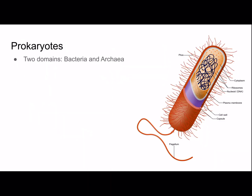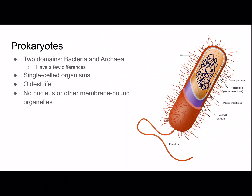Prokaryotes are in two domains: bacteria and archaea, and those two domains have a few differences. All prokaryotes are single-celled organisms and the oldest life. It's very important that they don't have a nucleus or other membrane-bound organelles — this is one of the big things that makes them different from eukaryotes. So instead of a nucleus, they have a nucleoid, which is a region where the cell's DNA is.